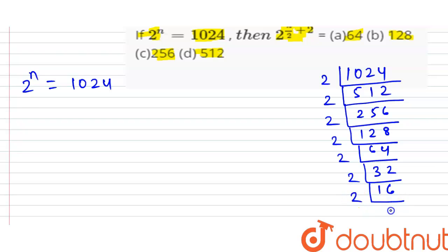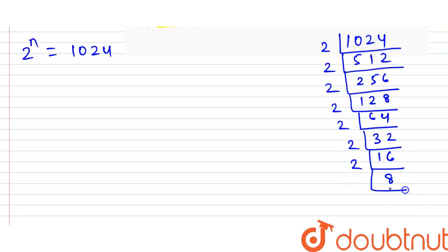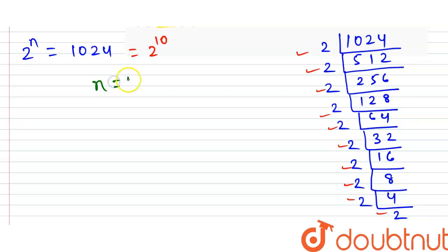Continuing: 64 divided by 2 is 32, divided by 2 is 16, divided by 2 is 8, divided by 2 is 4, divided by 2 is 2. Counting the number of 2s: 1, 2, 3, 4, 5, 6, 7, 8, 9, 10. So 1024 equals 2 to the power 10, meaning n equals 10.